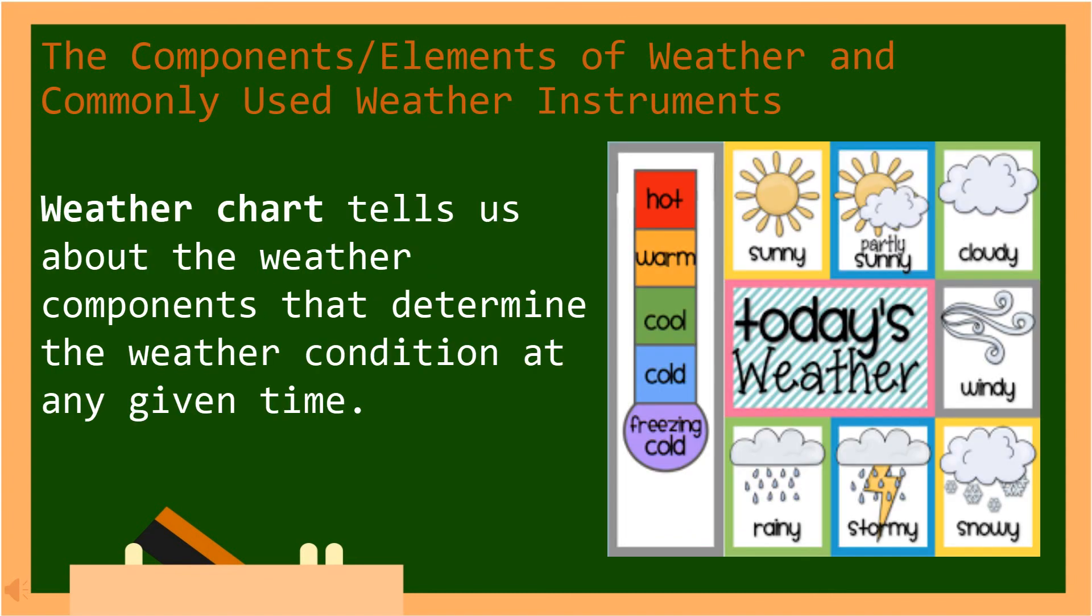Weather chart tells us about the weather components that determine the weather condition at any given time. In Tagalog, ang chart ng panahon ay nagsasabi sa atin ng mga bahagi ng panahon na tumutukoy sa kondisyon ng panahon sa anumang naibigay na oras.